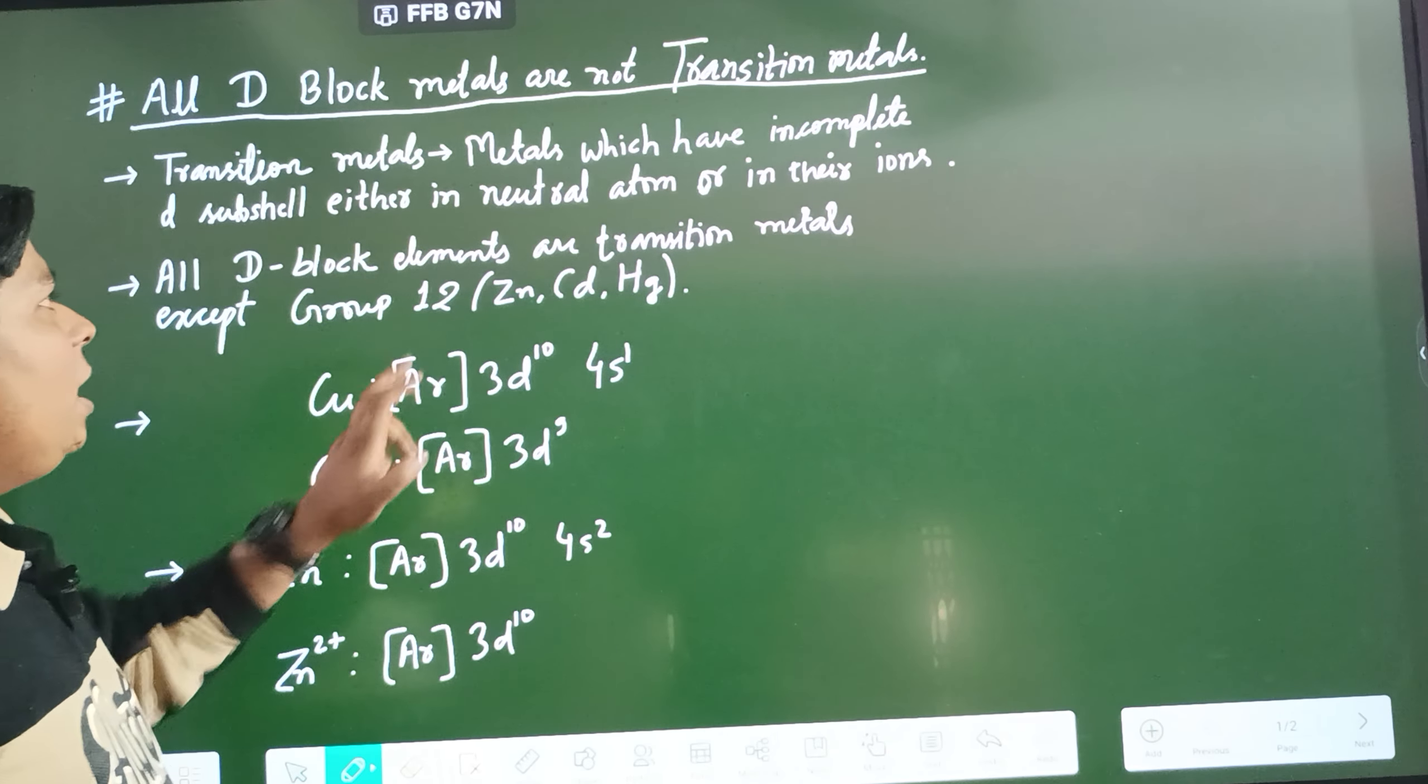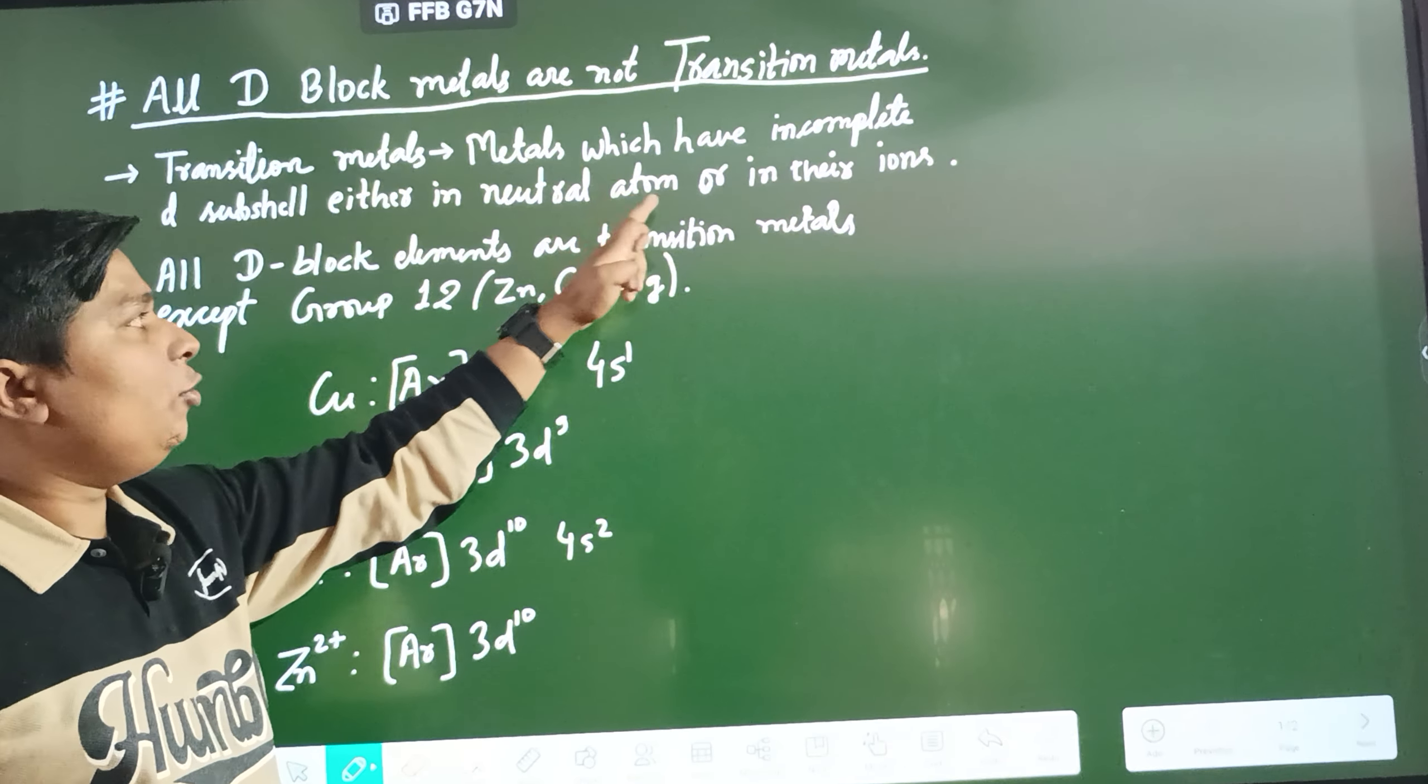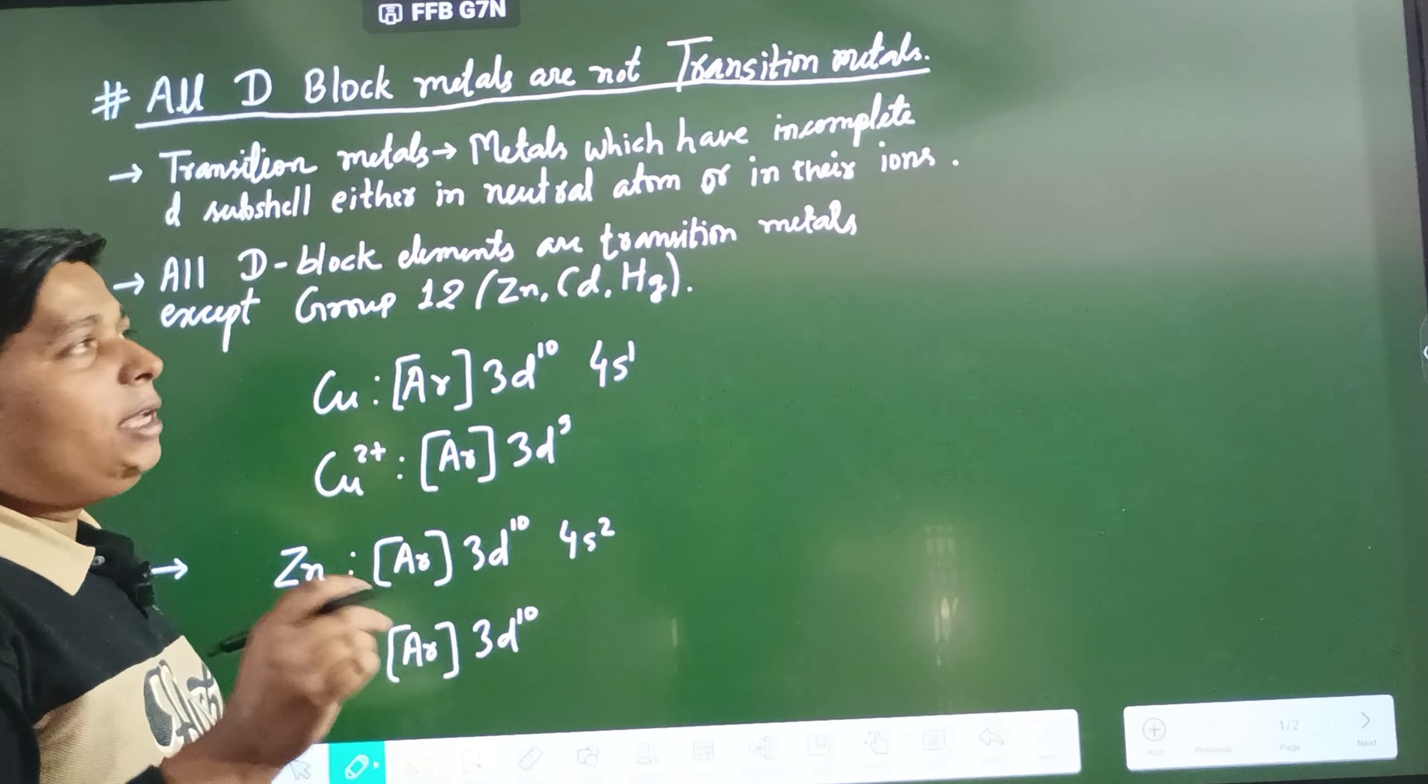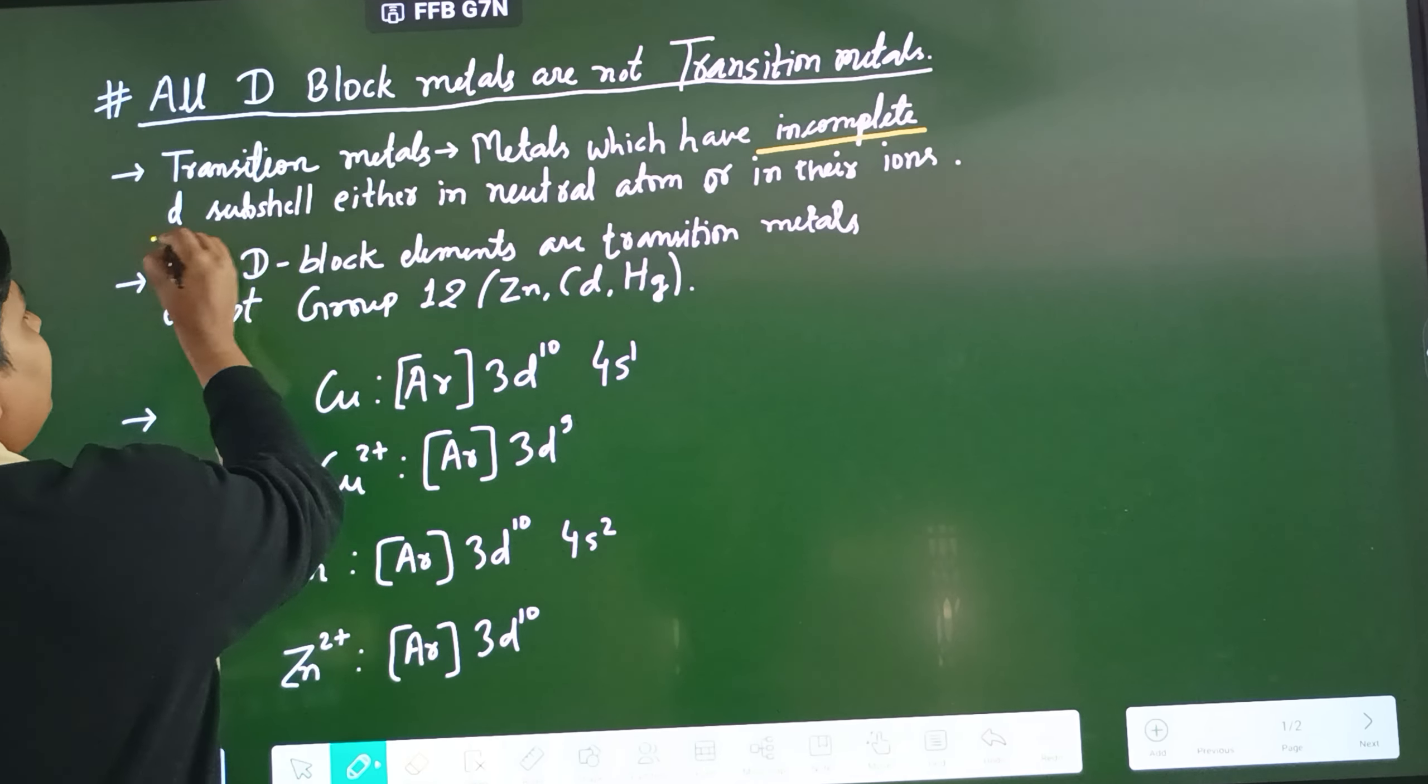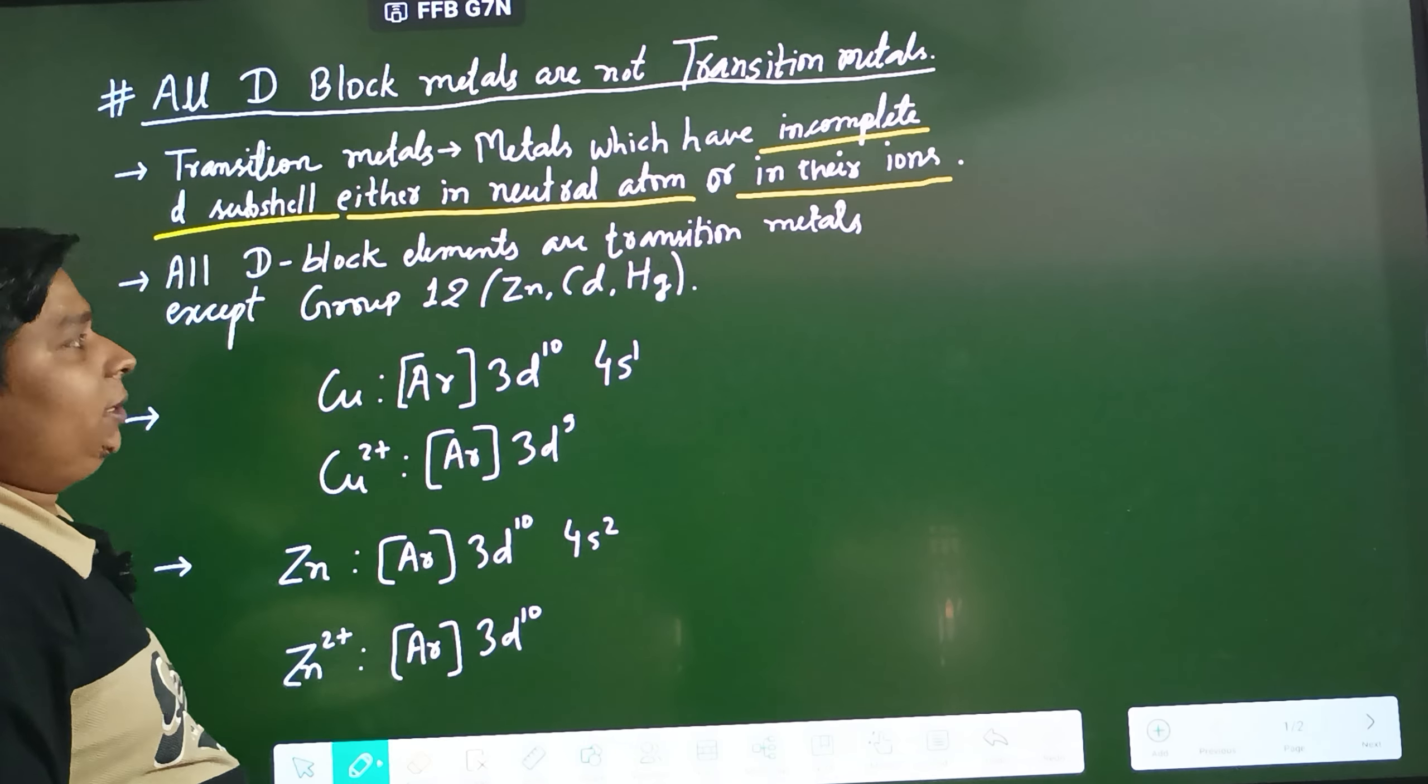The definition of transition metals is metals which have incomplete D-subshell either in neutral atom or in their ion. The thing that we have to note here is they must have incomplete D-subshell either in neutral atom or in their ions.